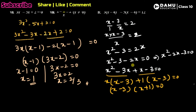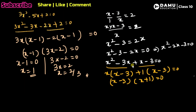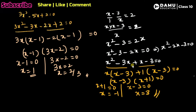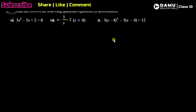This gives (x - 3)(x + 1) = 0. Either x + 1 = 0 giving x = -1, or x - 3 = 0 giving x = 3. These are the two roots for this equation.